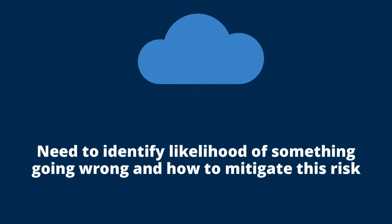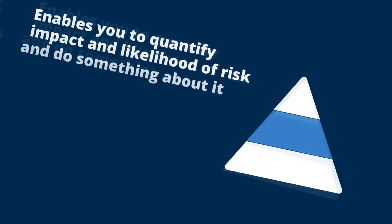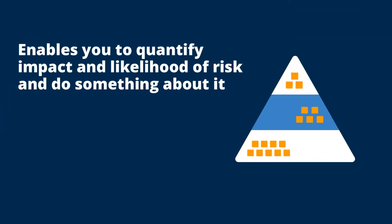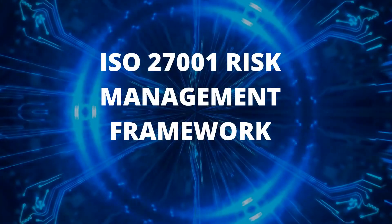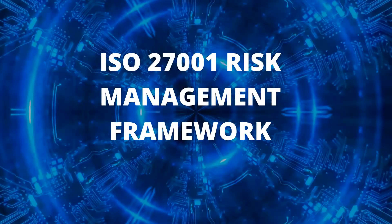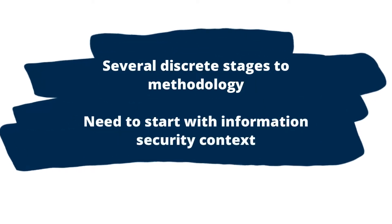Once this has been achieved, your methodology needs to be able to identify the likelihood of something going wrong and what can be done to mitigate this risk. In a nutshell, it enables you to quantify the impact and the likelihood elements of information security risk and then go on to do something about it.